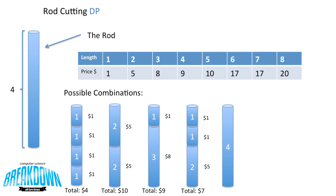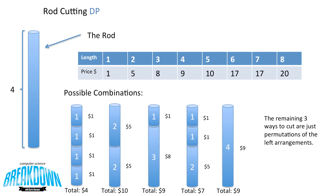And lastly, if we just leave the rod as size 4, it is worth $9, giving a total of $9. The remaining three ways to cut the rod are just permutations of some of the left arrangements. So when we look at this, we can see that cutting it into two pieces of size 2 gives us the most value at $10.